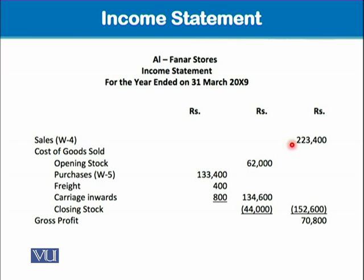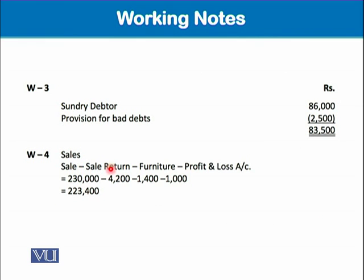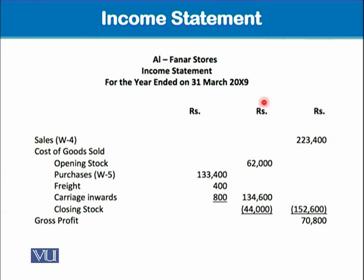For sales, we look into Working 4 — the sales amount is 223,400. Working 4 gives us: sales minus sales returns appearing in the trial balance, minus furniture wrongly credited to sales (1,400), and minus profit on disposal of motor vehicle wrongly taken to sales (1,000). So our final sales figure of 223,400 is placed in the outer column. Remember, in the income statement there is no debit and credit column — the outer column and inner column are used for workings.